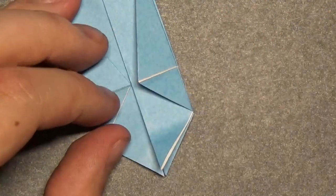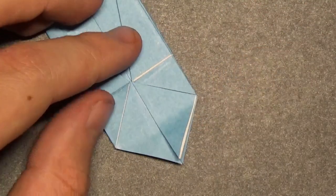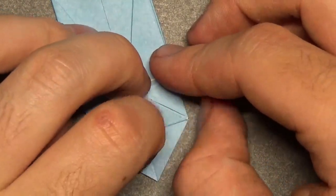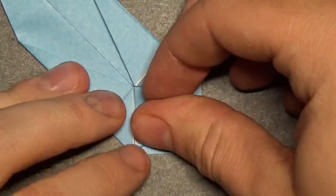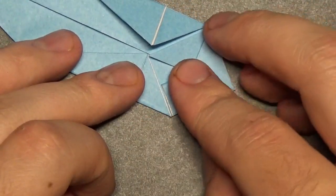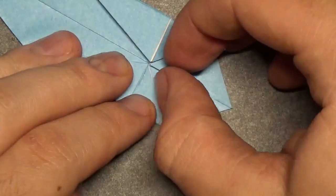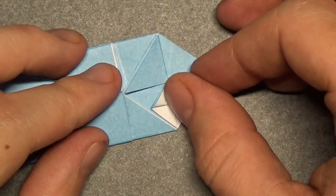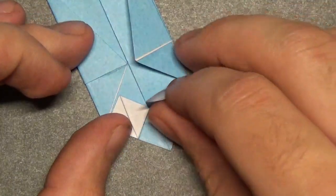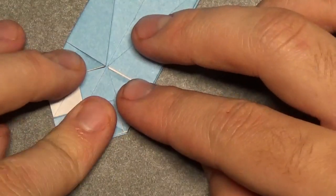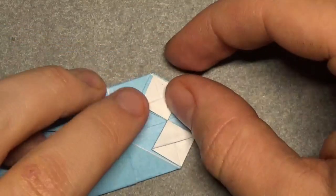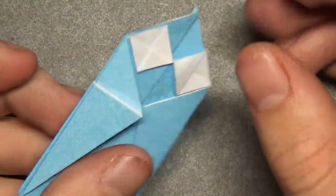So, take this corner and fold it to here, and also on this side too. But it's easiest to do one at a time. Okay, now open and squash. Okay, and fold the point up like this. And repeat on this side. Okay, like that, and there's the eyes.